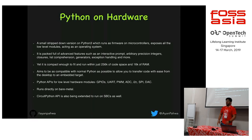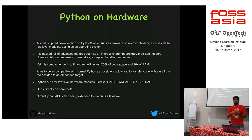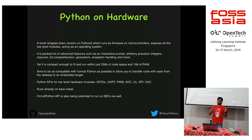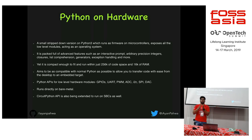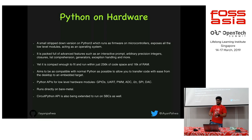MicroPython is essentially a stripped-down version of Python 3. Since Python 3 is open source, Damien took Python's source code, optimized it for small constrained hardware with only a few kilobytes of RAM, removed things that weren't required, added things needed to run on hardware, and created MicroPython. From there, Adafruit forked it for their own boards and CircuitPython was born.